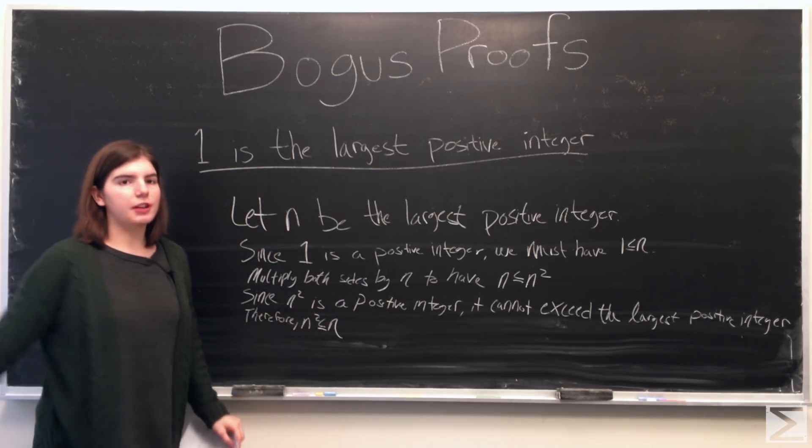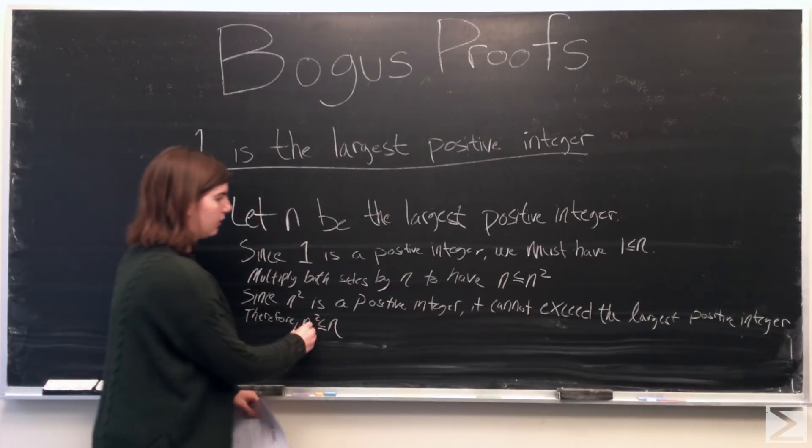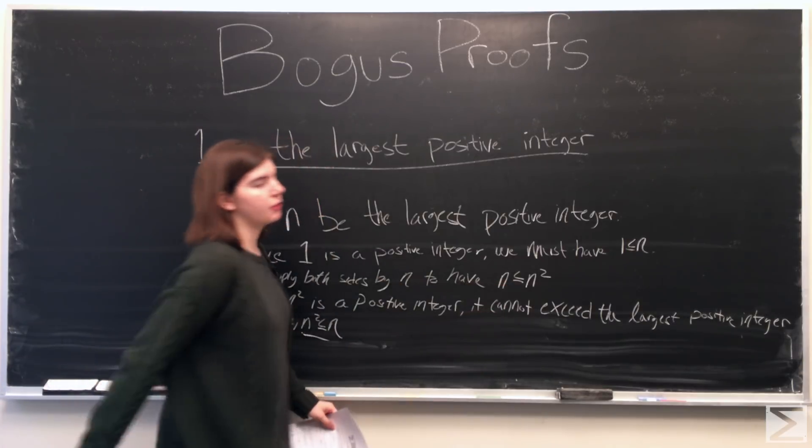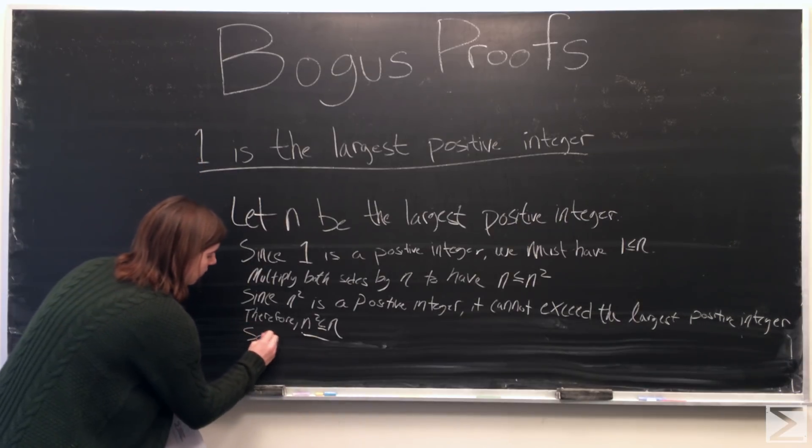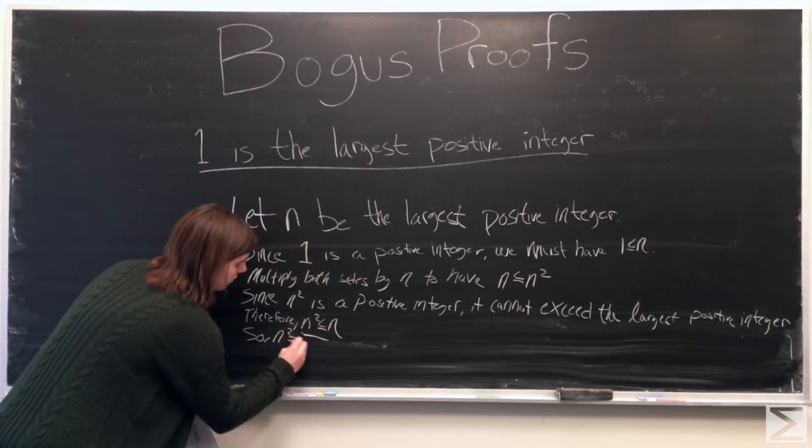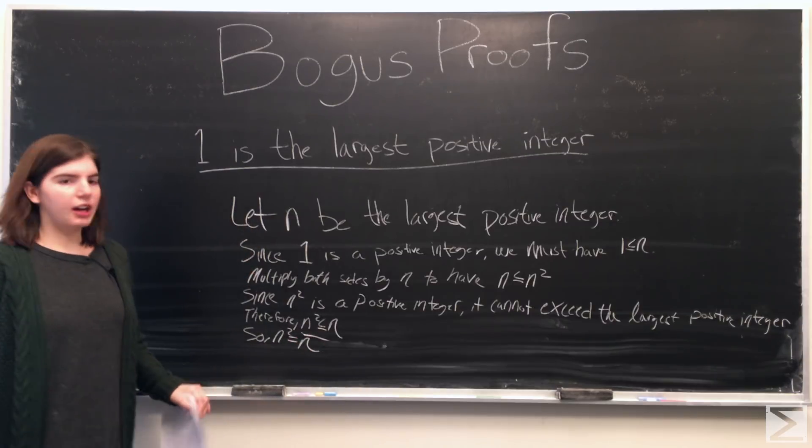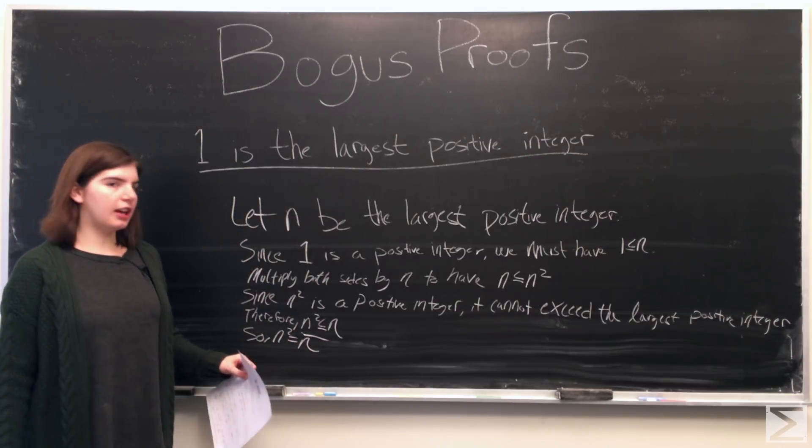So if we have n squared is less than or equal to n, we'll divide both sides by n and we'll see that n is equal to 1.